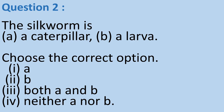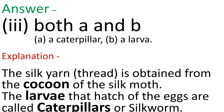Question 2: The silkworm is — (a) a caterpillar, (b) a larva. Choose the correct option. Option 1: a, Option 2: b, Option 3: both a and b, Option 4: neither a nor b. Answer: It is Option 3, both a and b — both a caterpillar as well as a larva. The silk yarn or thread is obtained from the cocoon of the silk moth, and the larvae that hatch from the eggs are called caterpillars or silkworms.